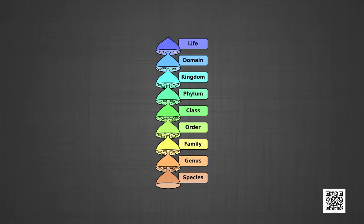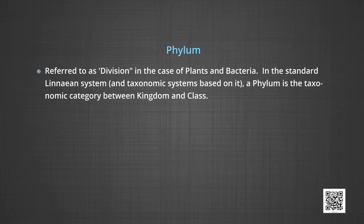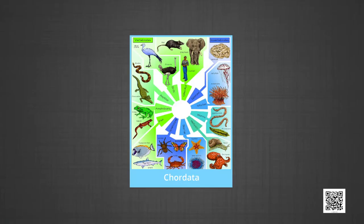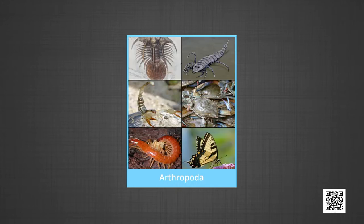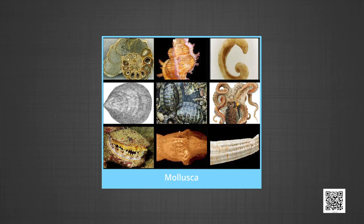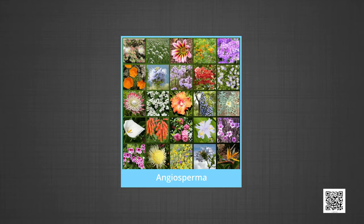Phylum is referred to as division in the case of plants and bacteria. In the standard Linnaean system, a phylum is the taxonomic category between kingdom and class. A phylum is a major ranking of organisms defined according to the most basic body parts shared by that group. Examples include: Chordates — animals with notochord and vertebrae; Arthropoda — animals with jointed pairs of legs and exoskeleton; Mollusks — animals with shell-secreting mantle; Angiosperms — the flowering plants.